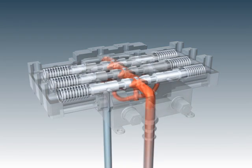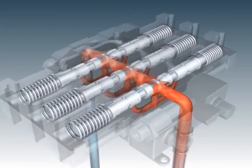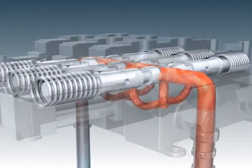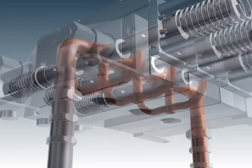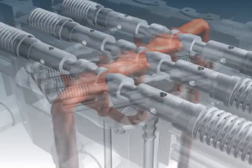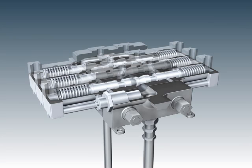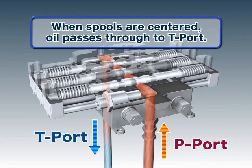The passages for the hydraulic oil are branched off as so. Hydraulic oil passes through the valve to a port based on the position of the spools. When all the spools are centered, hydraulic oil from the pump port passes through the central passage and each valve passage, exiting to the tank port.